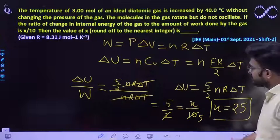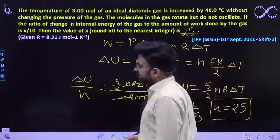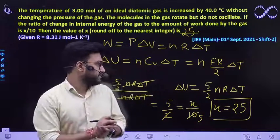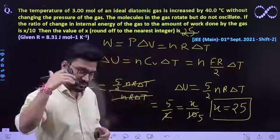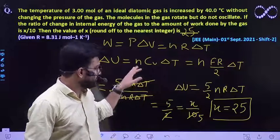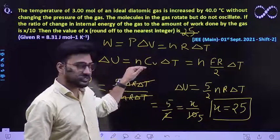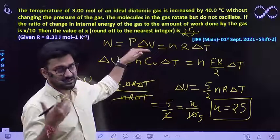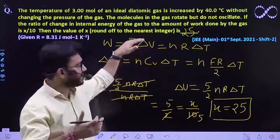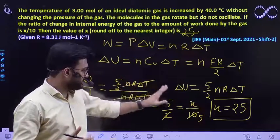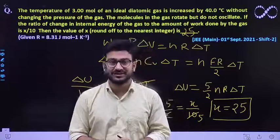So answer would be 25. The only thing that you need to learn is the change in internal energy of the system and also the work done by the gas during isobaric process. Rest everything is clear. I hope this question is clear to everyone. Thank you.